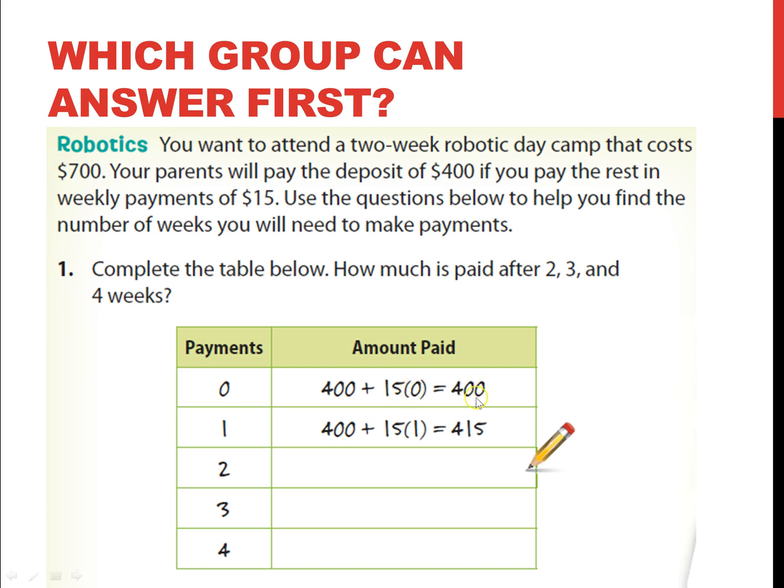So, zero weeks, you have $400, that's the amount paid. One week, you have $415. And if we keep on going with the table, at two weeks you have $430. Three weeks, $445. And at four weeks, you have $460.